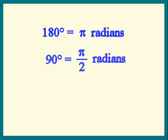Divide each side by 2. We get 45 degrees is pi over 4 radians.